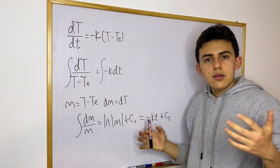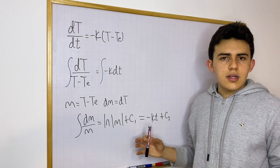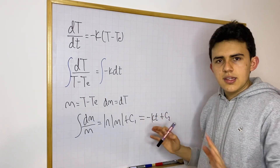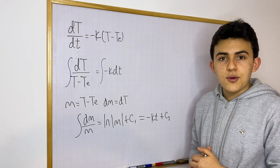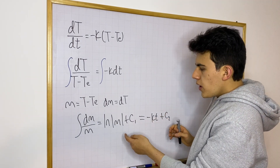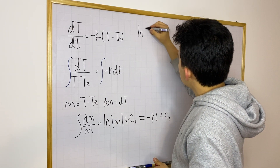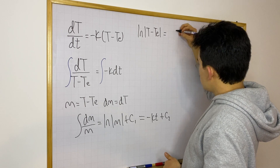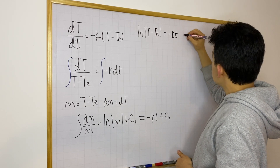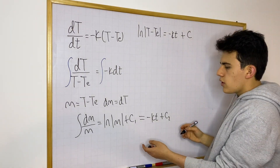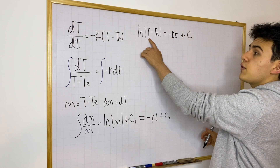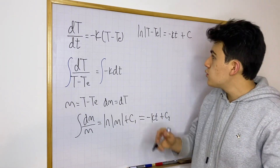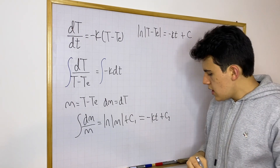Eventually c1 and c2 can be combined together, and you just get one constant c. So usually we just write c on one side of the equation. So now, substituting back, we have: natural log of (T minus T sub e) equals minus kt plus C. We need to find T as a function of time, so we just need to do the algebra and solve for T.